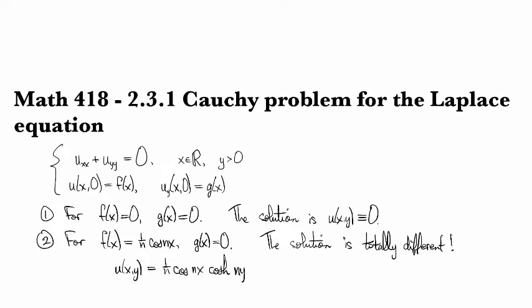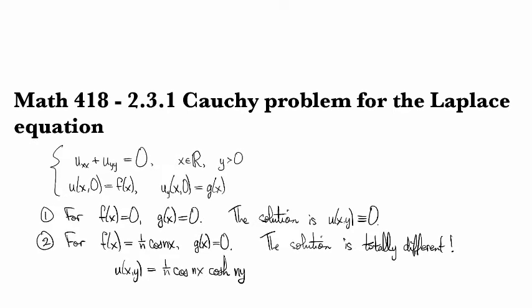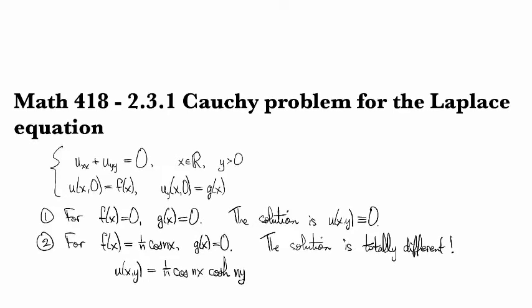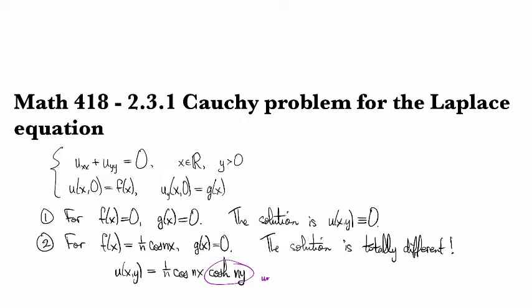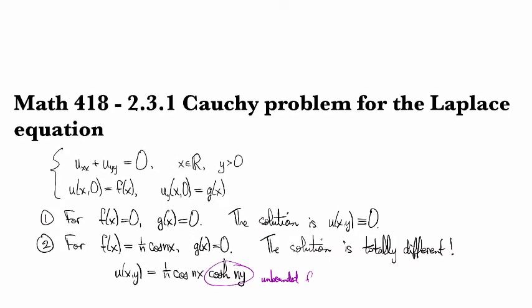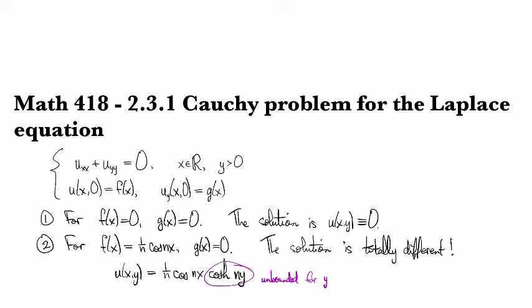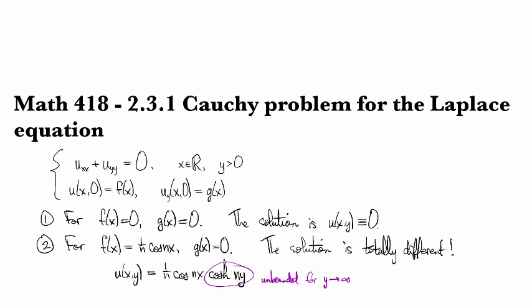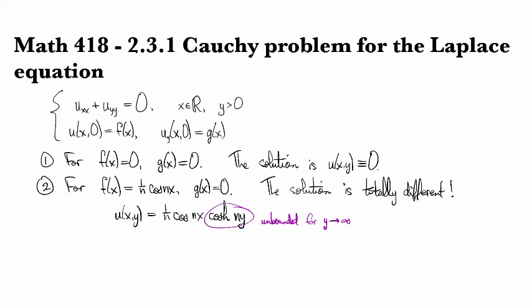cosh ny. And this cosh part right here is going to be unbounded as y gets large because it looks like an exponential function.